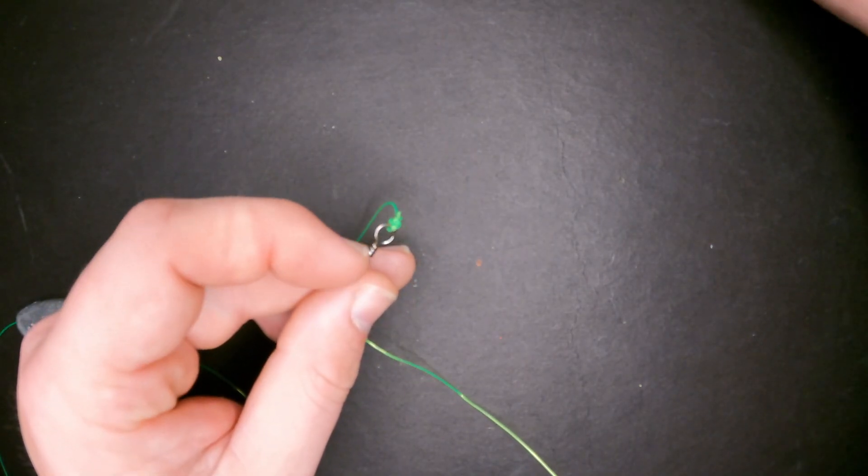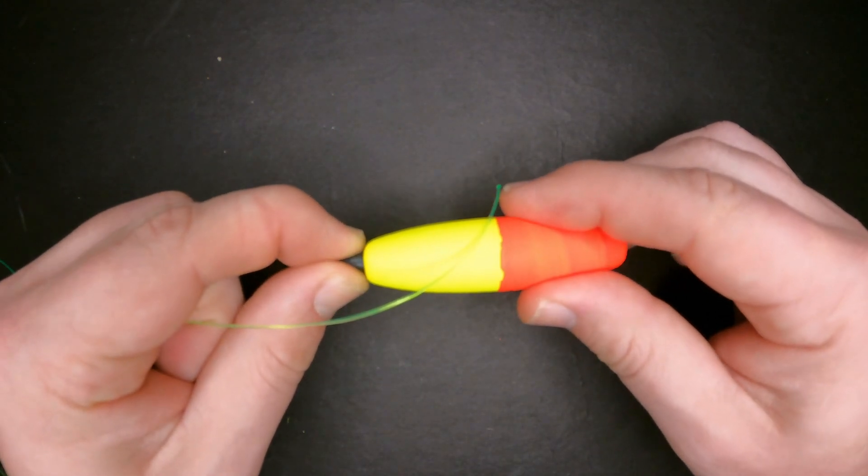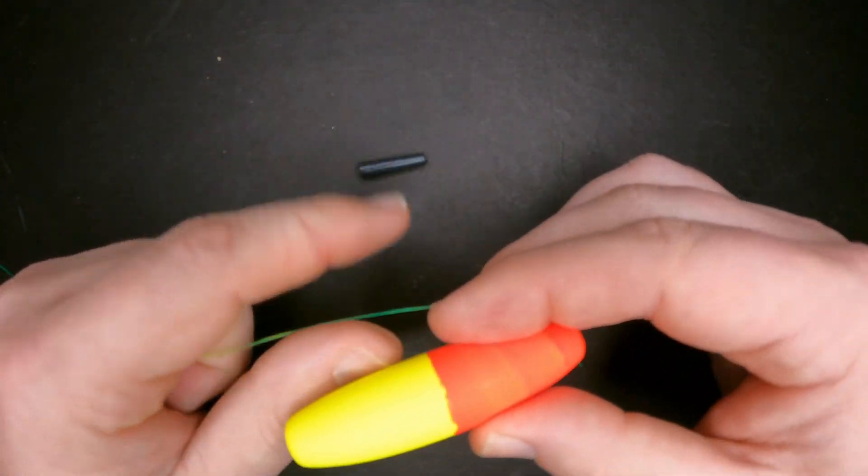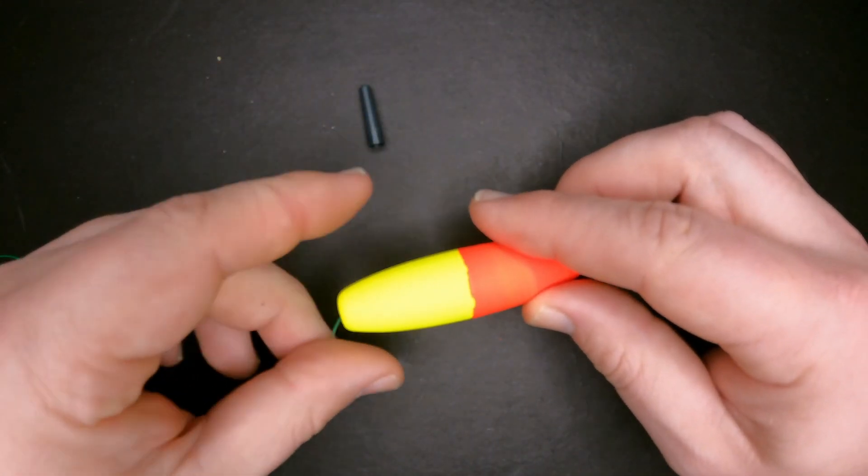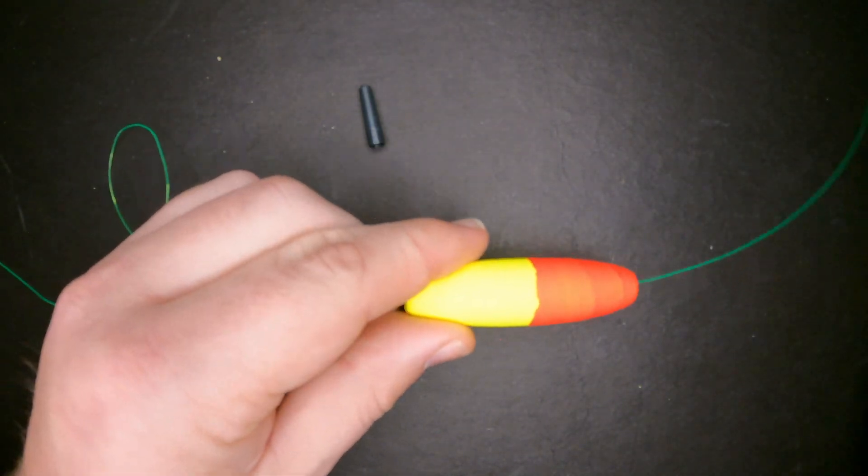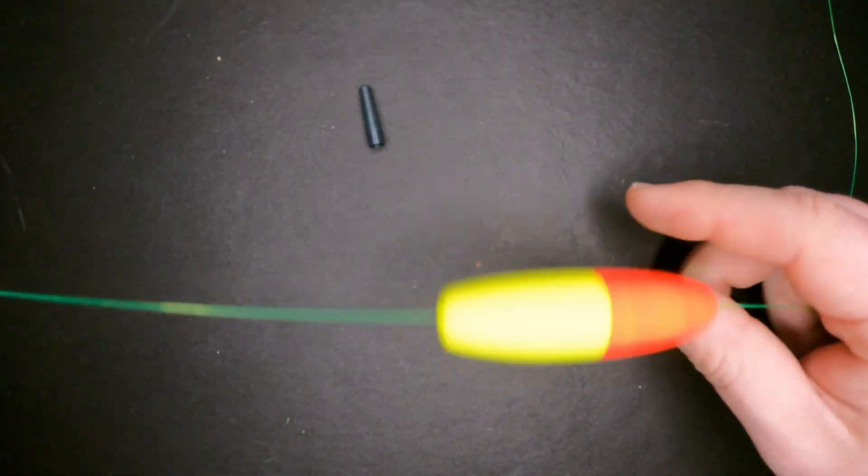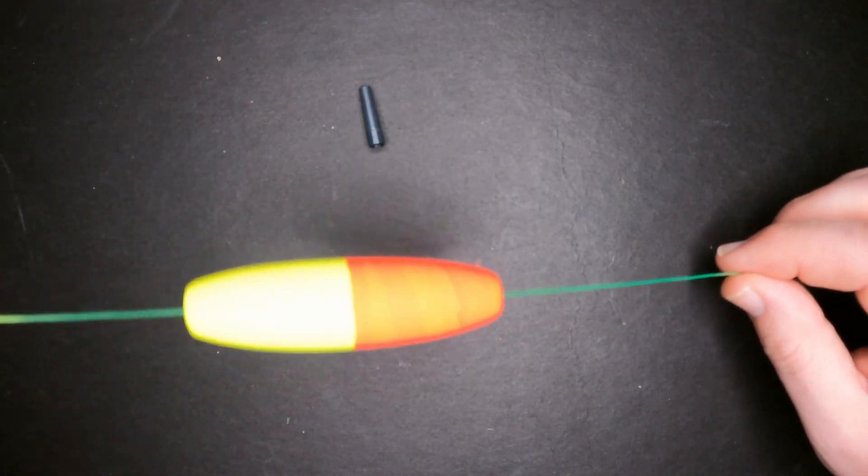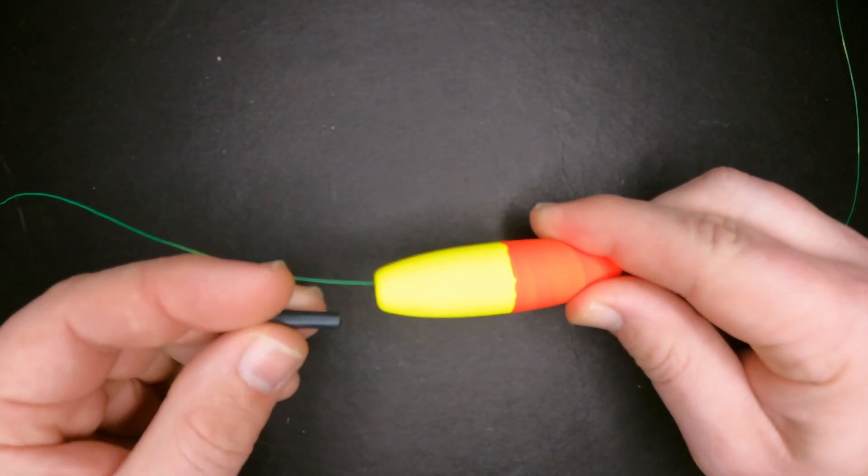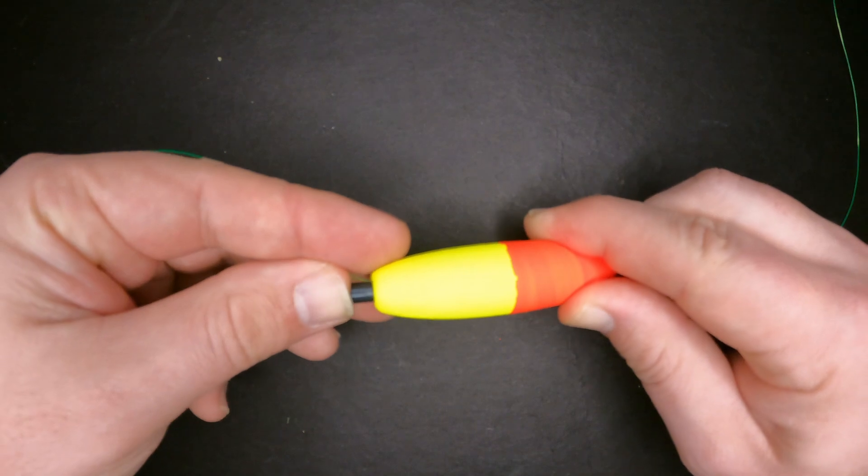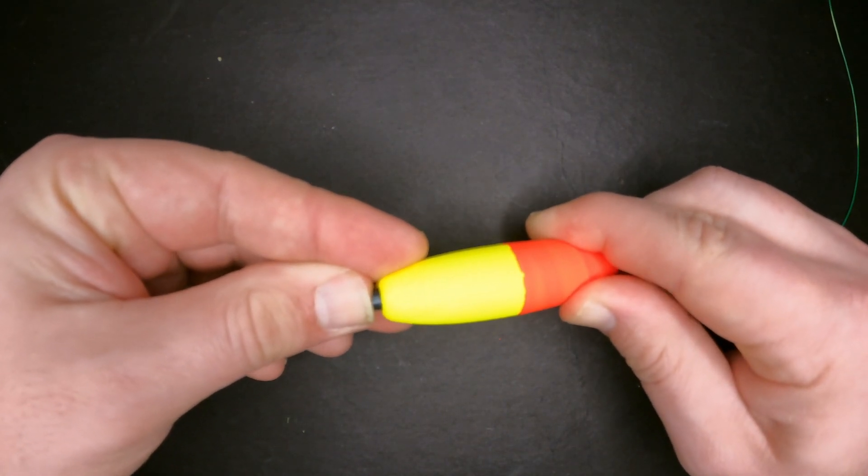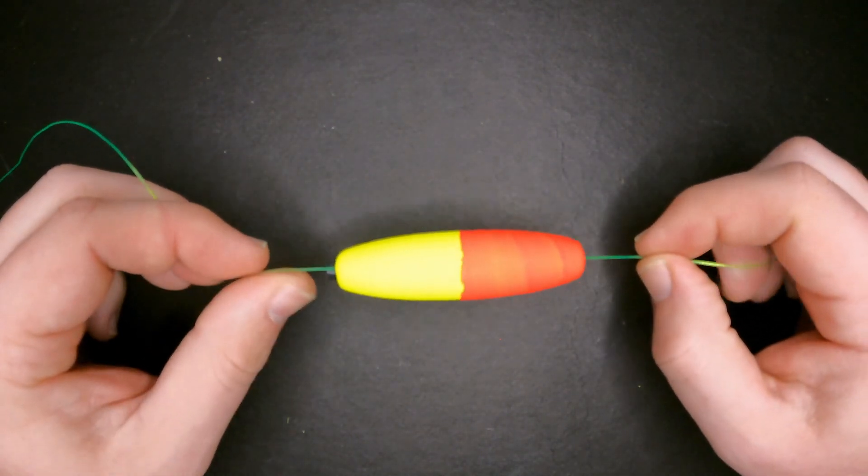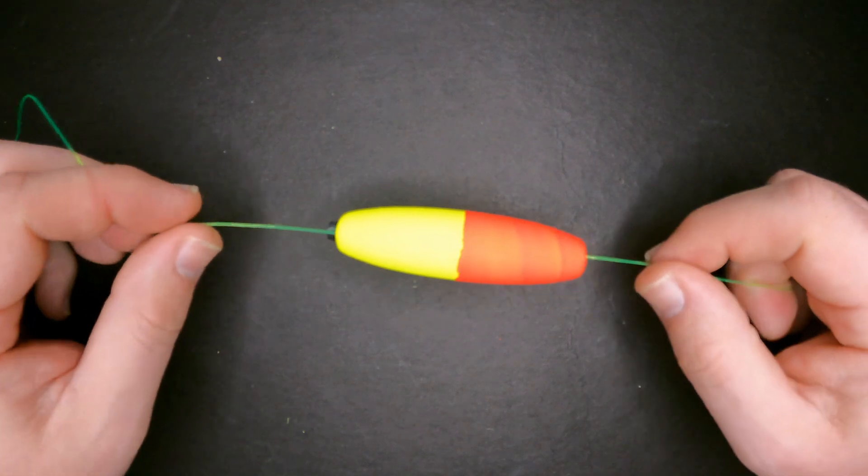After the main line is tied on let's move back to the leader. At this point we'll add the cigar float so I'm going to pull out the little plug here. Thread the line through the float and then you can slide this float up and down the leader wherever you want to place it. I kind of tend to put it right in the middle here. So slide the little plug back into the float and that thing should stay put nice and snug.